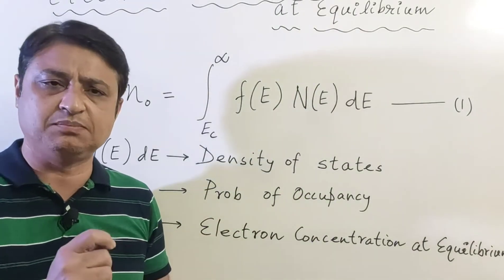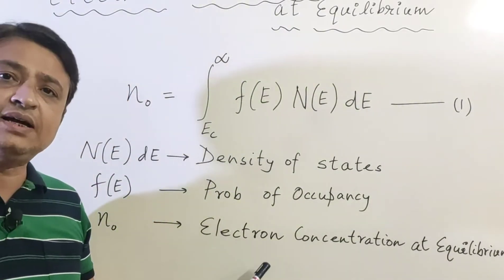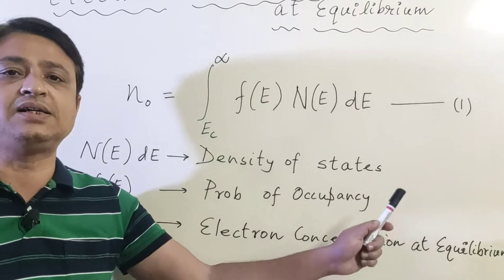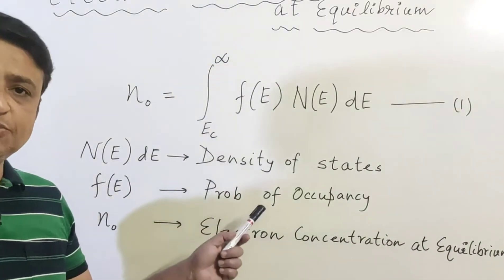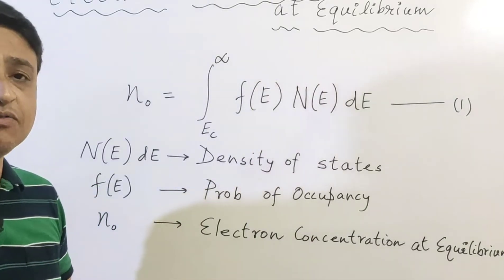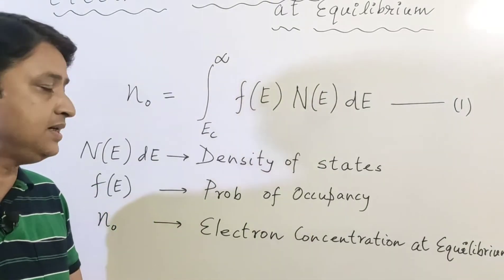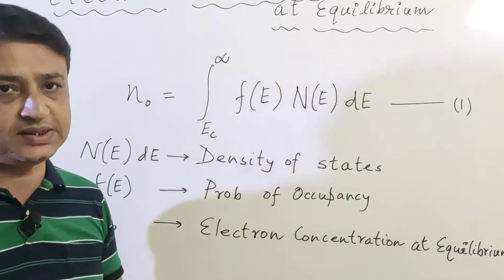What do these terms mean? N₀ is the electron concentration at equilibrium, f(E) is the probability of occupancy of an electron at energy level E, and N(E) dE is the density of states.